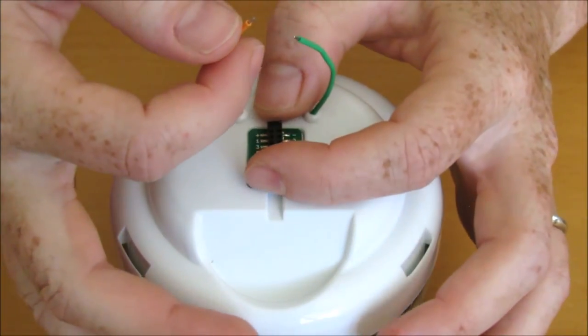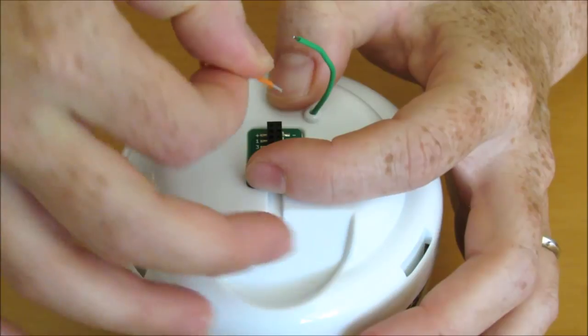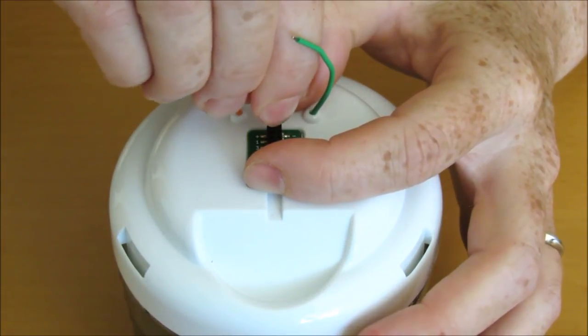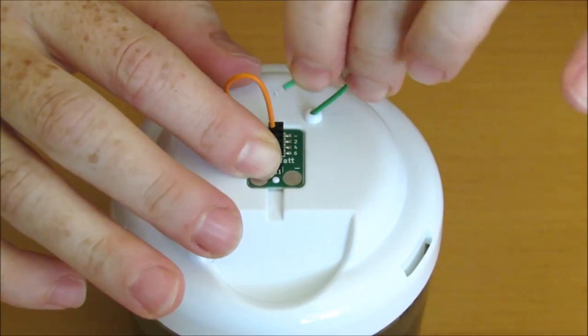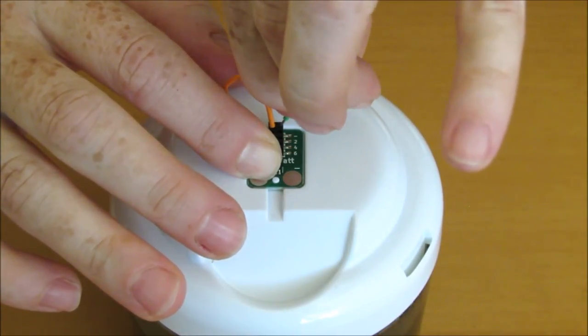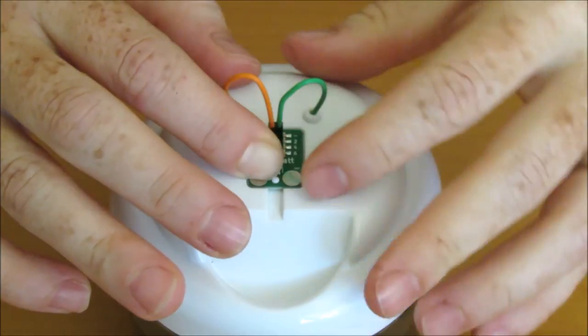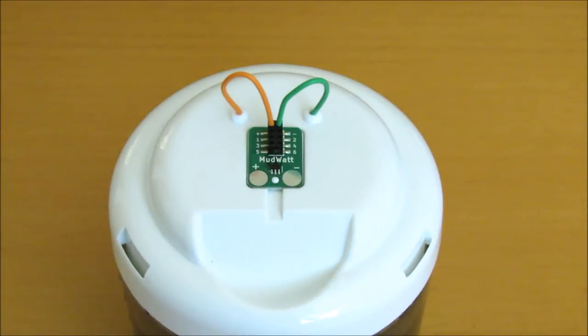Put the orange cathode wire into the pin with the positive symbol. Put the green anode wire into the pin with the negative symbol. Now your MudWatt microbial fuel cell is ready to start producing power. Check out our other tutorials to set up your MudWatt in the blinker and clock modes. Thanks for watching!